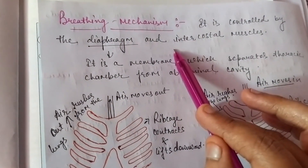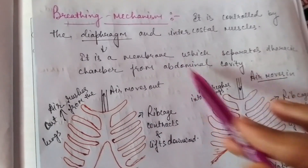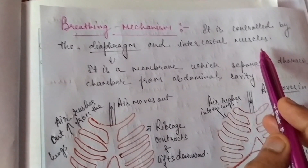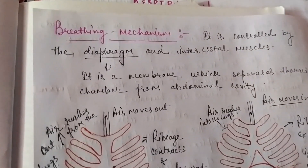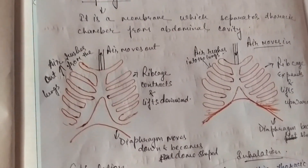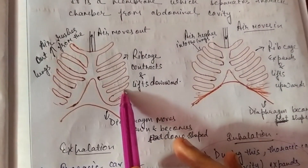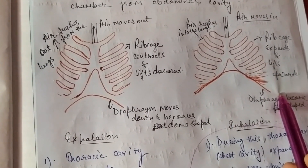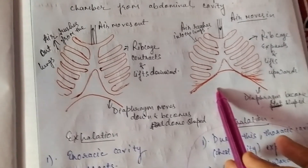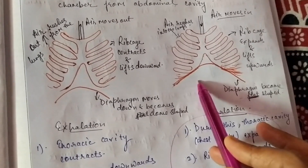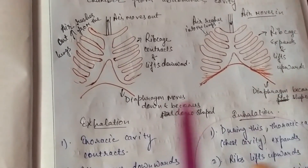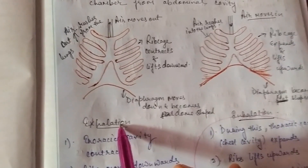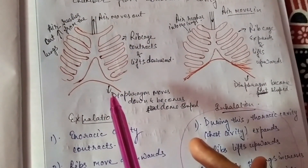The intercostal muscles are part of the breathing mechanism, which is controlled by the diaphragm and intercostal muscles. There are two processes in this breathing mechanism: one is inhalation and one is exhalation. Inhalation is a process in which the person takes the air in. Exhalation is a process in which the person breathes out carbon dioxide from the body.